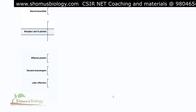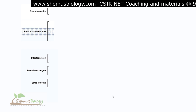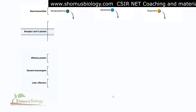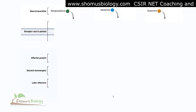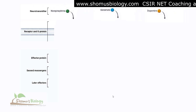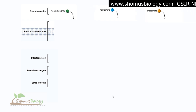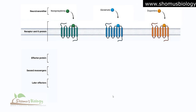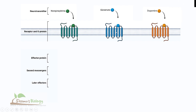The three different types of neurotransmitters we'll examine are norepinephrine, glutamate, and dopamine. Each has a completely different corresponding GPCR: the GPCR for norepinephrine is shown in green, for glutamate in blue, and for dopamine in orange.